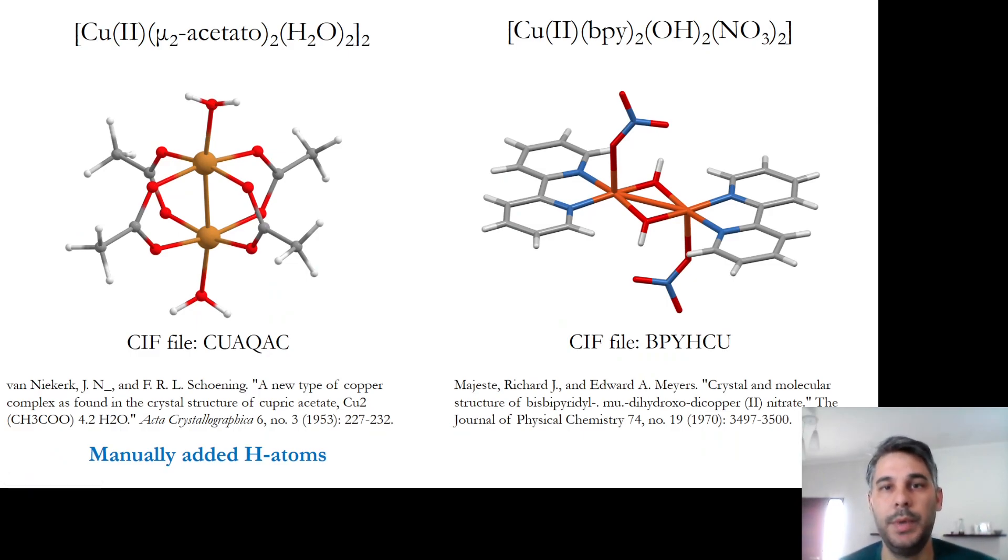One month ago, I published a video on how to calculate exchange couplings using broken symmetry for these two complexes, a copper acetate dimer and a copper bipyridine muhydroxodimer. The results I got were very underwhelming. The exchange coupling for the copper acetate complex especially was really bad.